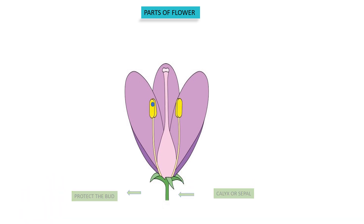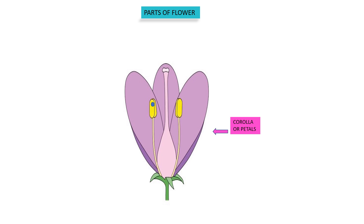The second whorl is the most colorful and beautiful part of the flower, and that is called the petal. Collectively, it is called the corolla.